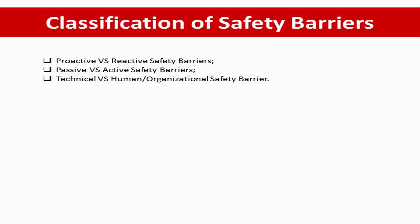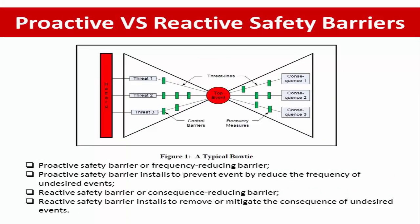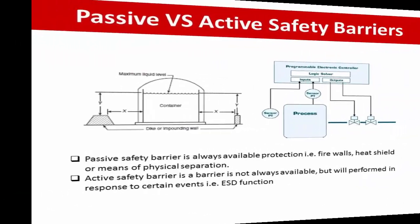Starting with proactive or reactive safety barriers. A proactive safety barrier, also called a frequency reduction barrier, is a safety barrier installed to prevent one or more undesired events and reduce their frequency. A reactive safety barrier, or consequence reduction barrier, is a safety barrier installed to remove or mitigate the consequence of one or more undesired events. So proactive means prevention, and reactive means mitigation.